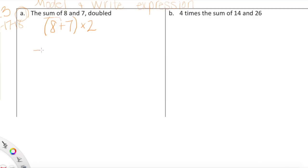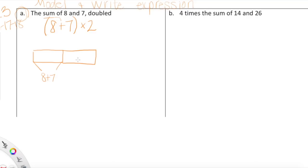This is not the only way to model this expression — this is my way of modeling. As long as your model is mathematically sound and connects with the expression, you are good. This section represents eight plus seven, or the sum of eight and seven, and then I draw an exact replica next to it — two copies of eight plus seven. That's the model done. Now let's look at part B: four times the sum of 14 and 26.